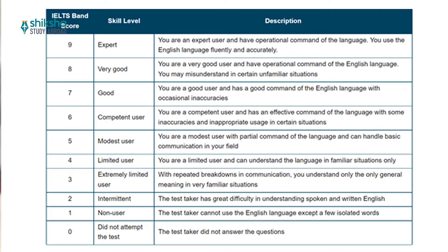Band 5 means you are a modest user of English with partial command of the language, able to understand basic communication in your field. Band 4 means you are a limited user and can only understand English in familiar situations. Band 3 means you are an extremely limited user — you will have breakdowns in communication and understand only the general meaning in very familiar situations.